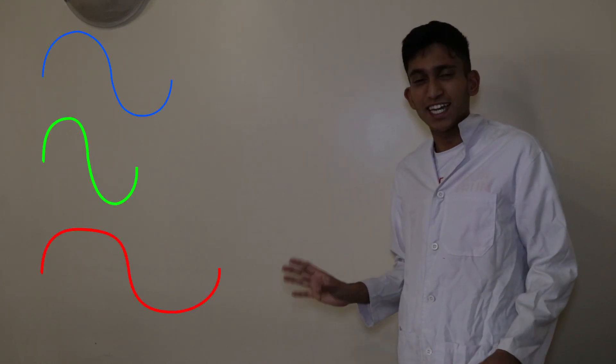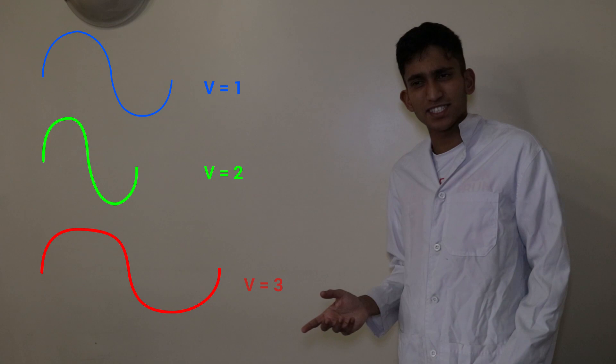But to get there we used wavelengths of different wavelengths, hence different velocities. So in trying to know the position, we made the velocity uncertain, and in trying to know the velocity, we made the position uncertain. This is the Heisenberg Uncertainty Principle. Thank you for watching.